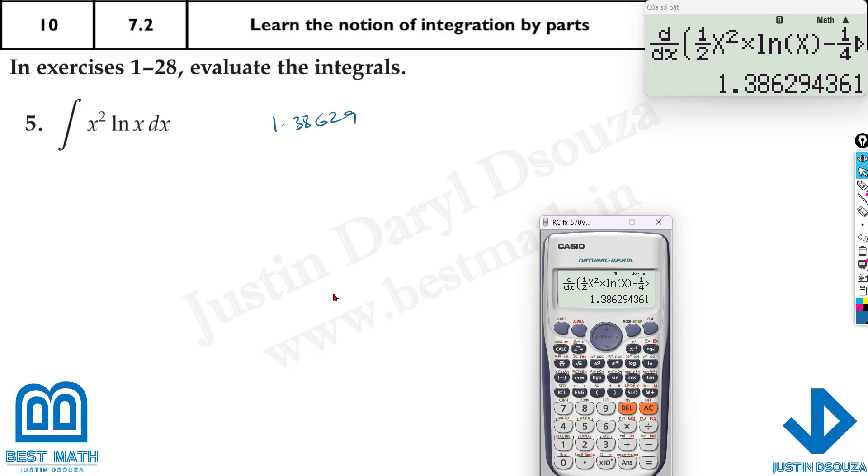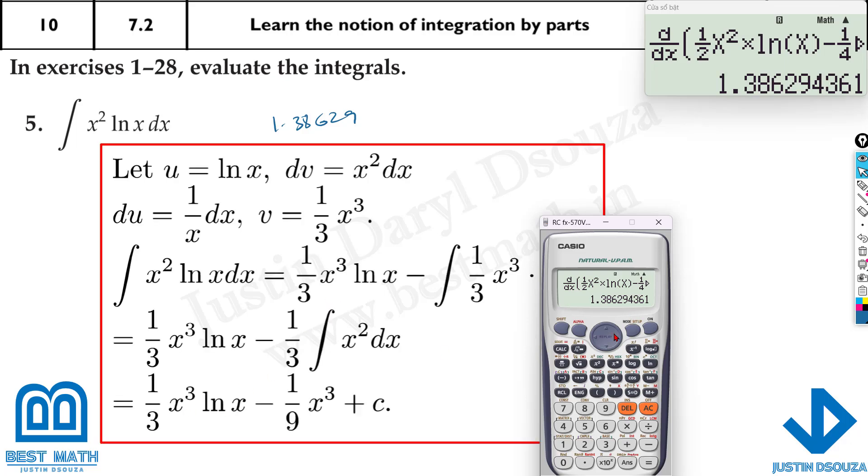Now, the same thing here as well. What I'll do is I'll just change the answer first. Because I know this is the correct answer. The question must match the answer. It's 1 third X cubed. Natural logarithm X minus 1 by 9. X cubed here. So, what is the answer I'm getting? It's 2.77. Now, let me show you the answer. X squared. Natural logarithm X calculated at 2. It'll be 2.77. Yes, that's correct.